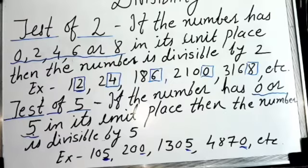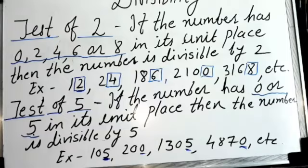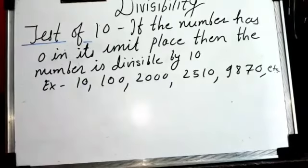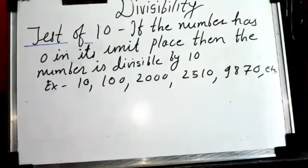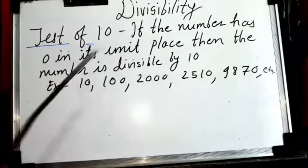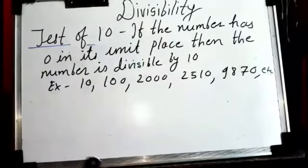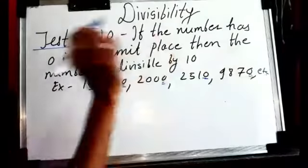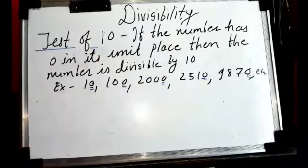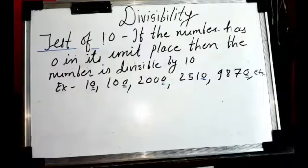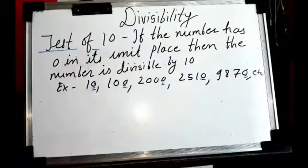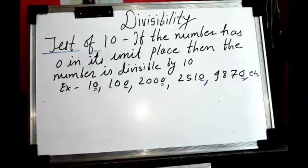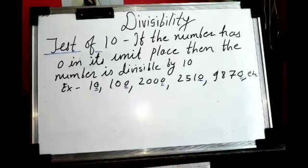You have to write both the tests with examples in your notebook. The test of ten is almost the same as for five: if the number has zero in its unit place, then the number is divisible by ten. In the test of five there were two options — zero or five — but in the test of ten only zero qualifies. These three tests you have to write in your notebook, and then we will look at the exercise given in the textbook.